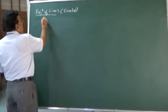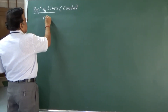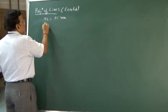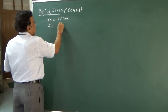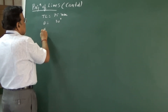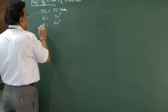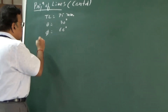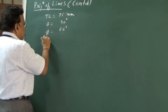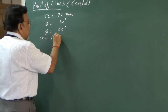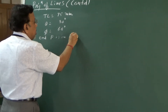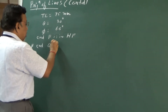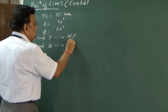Let me do one more problem wherein the theta given is — let us say true length is given as 75 mm and theta is 30 degrees, with inclination reference to HP as 30 and inclination reference to VP as 60 degrees. Consider that end P is in HP and end Q is in VP.